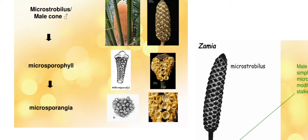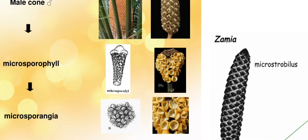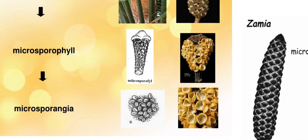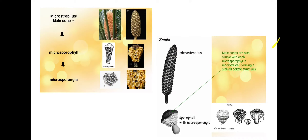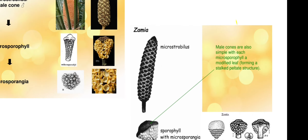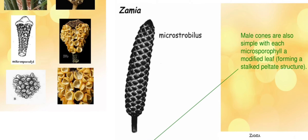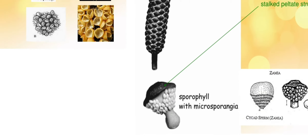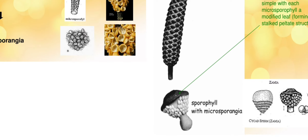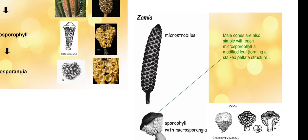Here you can clearly see the microstrobilus or male cone, and here is an image of a microsporophyll. Leaves bearing spores are called sporophylls, and when they bear microspores they are called microsporophylls. They bear microsporangia on their lower surface and they occur in groups called sori. Here is an image of Zamia showing the microstrobilus. Male cones are also simple, with each microsporophyll being a modified leaf forming a stalked peltate structure.